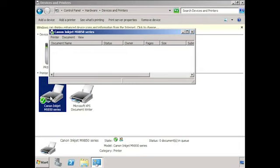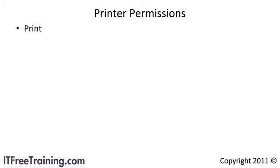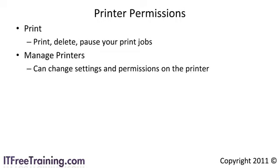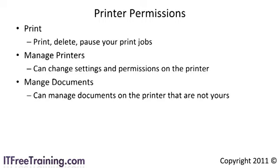This brings us to print permissions. Printer permissions determine what you can and cannot do on a printer. There are three basic permissions. First, the Print permission allows you to print, delete, and pause your own print jobs — you have control over your own jobs and no one else's. Next, Manage Printers allows you to change settings and permissions on the printer. The last permission, Manage Documents, allows you to manage documents on the printer that are not yours — meaning you can delete or pause a job created by another user.